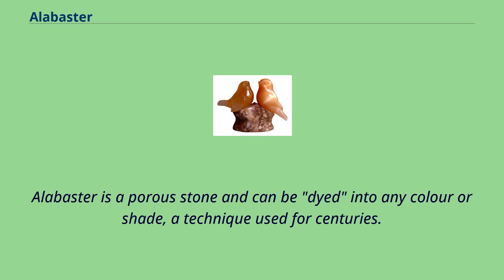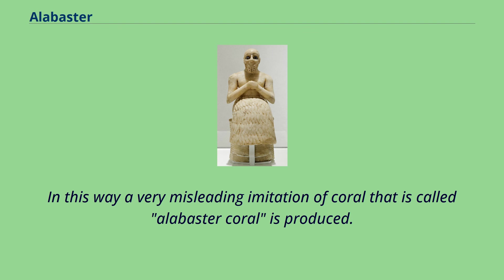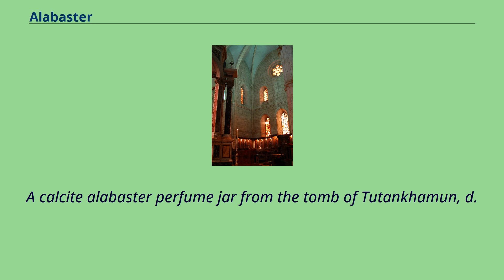Alabaster is a porous stone and can be dyed into any color or shade, a technique used for centuries. For this, the stone needs to be fully immersed in various pigmentary solutions and heated to a specific temperature. The technique can be used to disguise alabaster. In this way a very misleading imitation of coral, called alabaster coral, is produced.